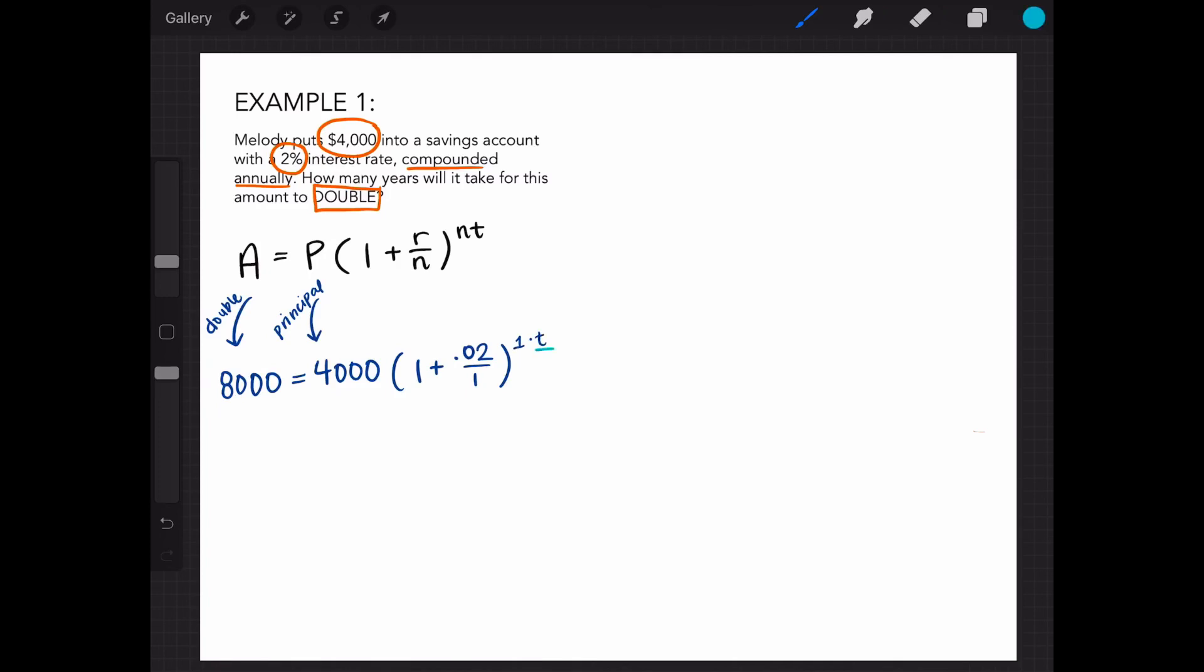We're looking to solve for t, so let's simplify what we have. We can divide by 4,000 on both sides, which is 2 on this side and cancels itself on this side. Then we are left with 1.02 to the t power.